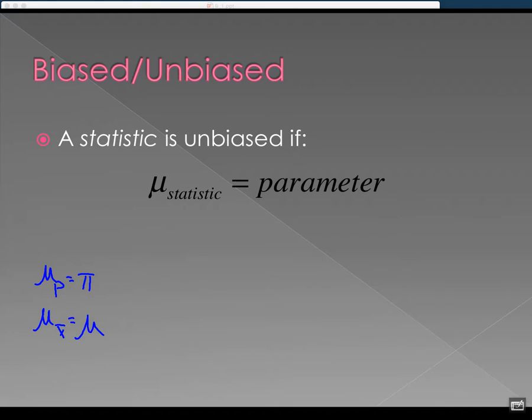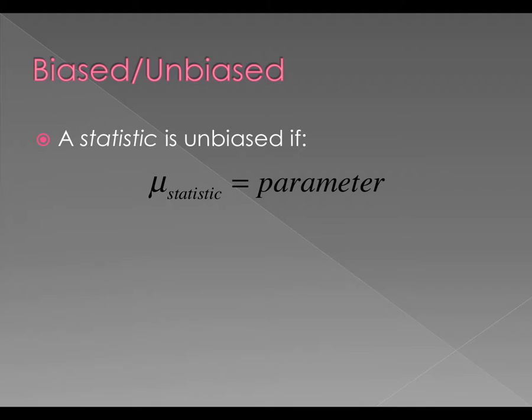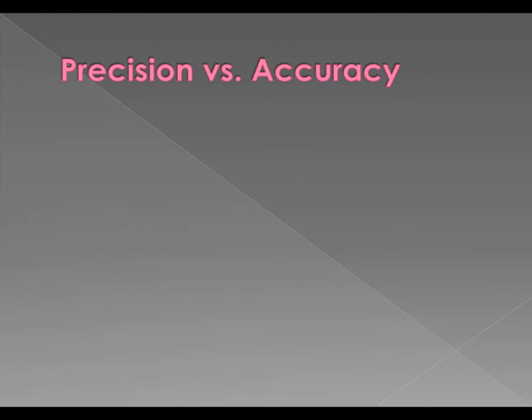So the one, like I said, that I think is hard to remember is variance is unbiased, but standard deviation is biased. You don't need to know why they are, but you just need to be able to tell me which ones are biased or which ones are bad.